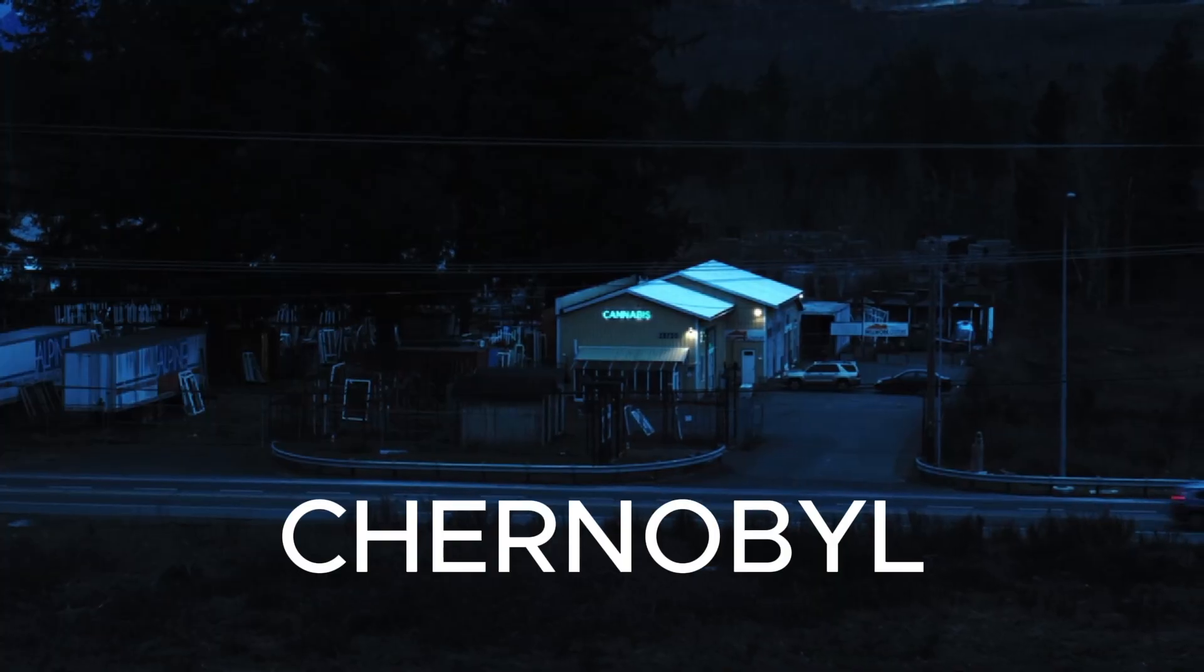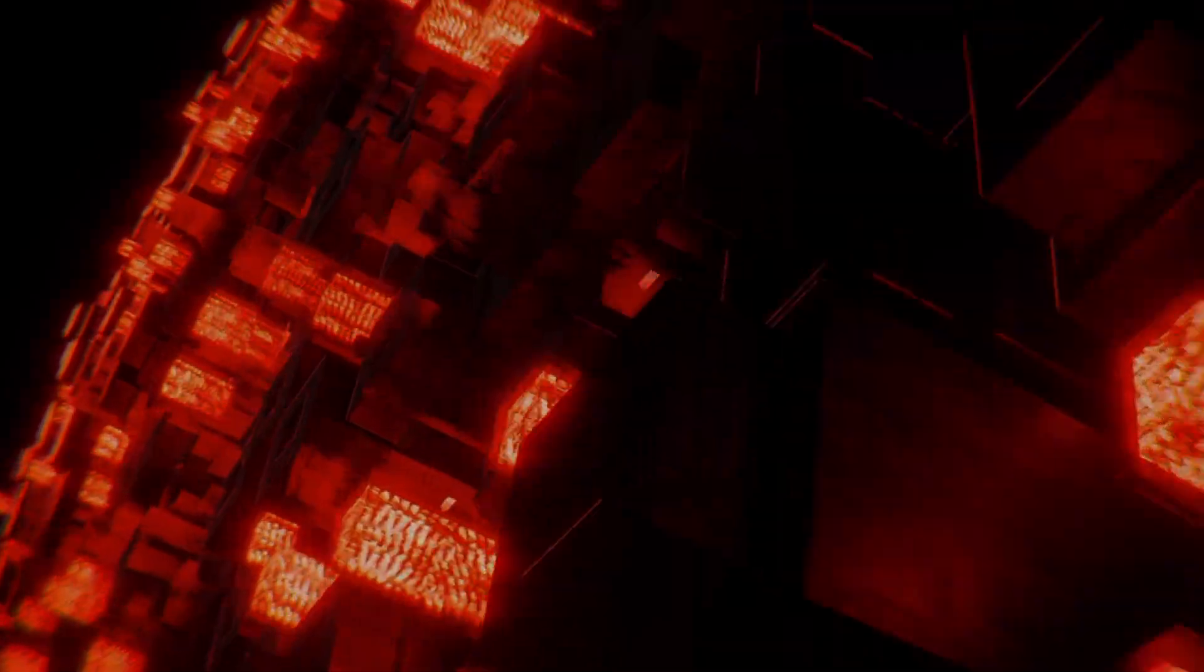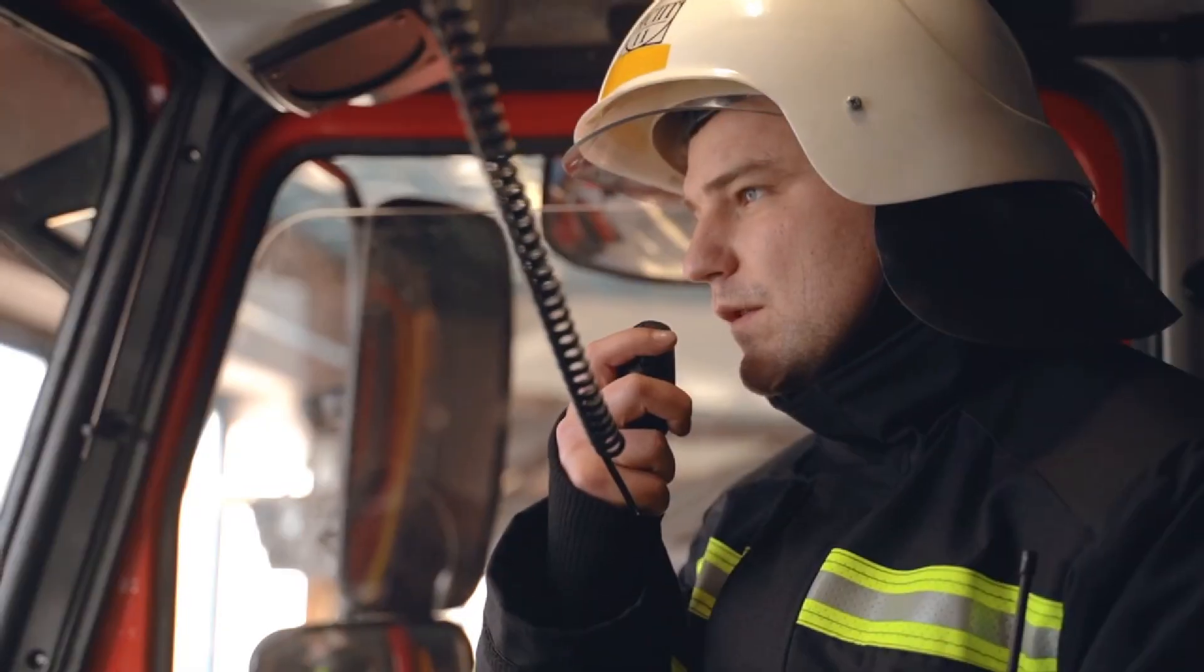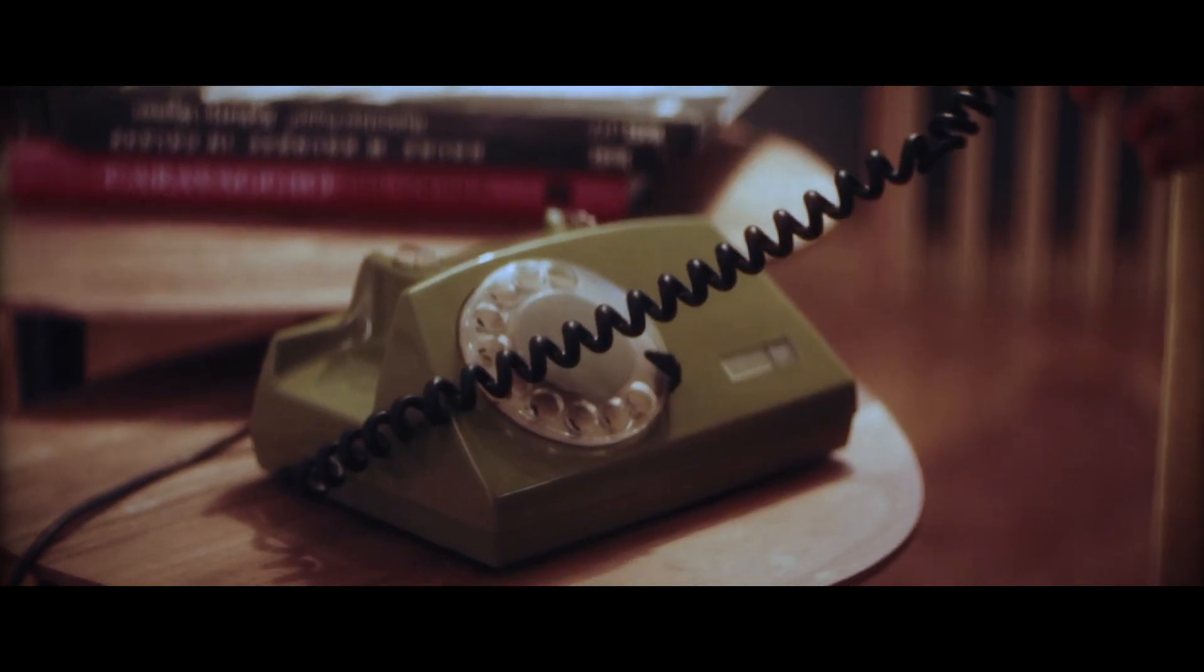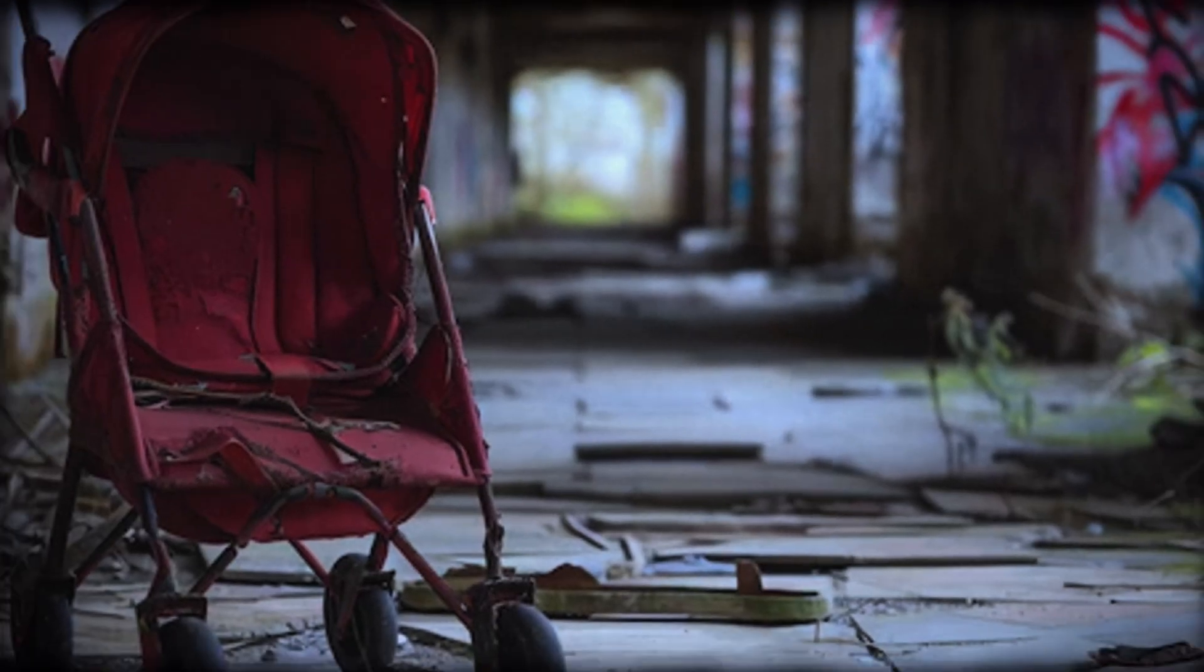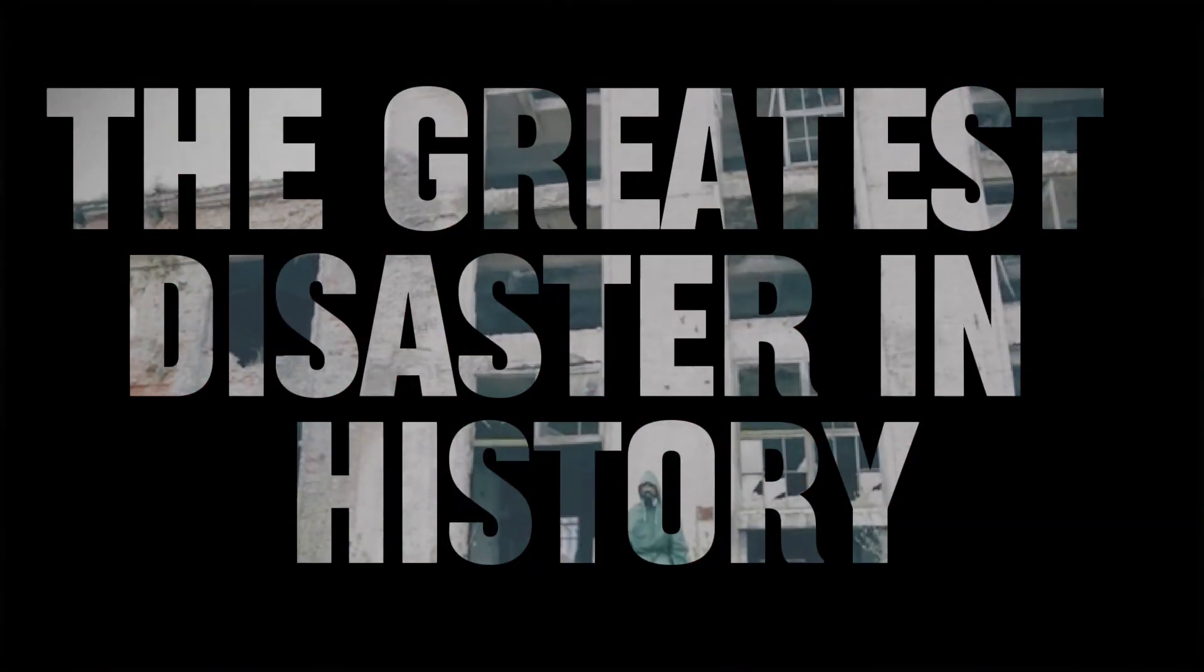It was a silent night in Chernobyl, but something went terribly wrong. A nuclear reactor exploded and the sky caught fire. What began in one small town destroyed everything, from Pripyat to the heart of the Soviet Empire, forever. This is the story of Chernobyl, the greatest disaster in history.